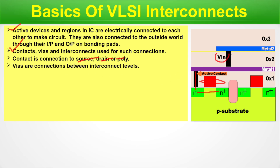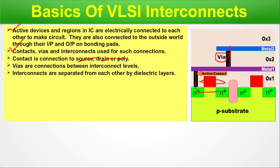Next is the via. As we can see in this diagram, this is a via — connections between interconnect levels. This is the metal-one level and this is the metal-two level. As technology has progressed, the number of metal layers has increased along with complexity of design and connections. Between interconnect levels, the connection is called a via. Interconnects are separated from each other by dielectric layers.